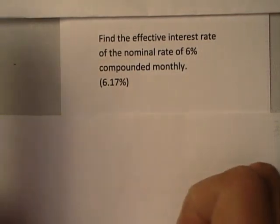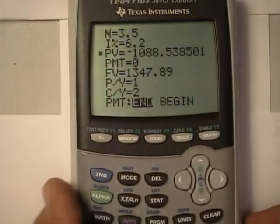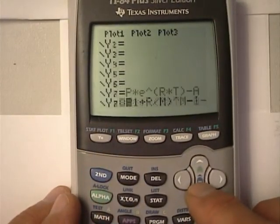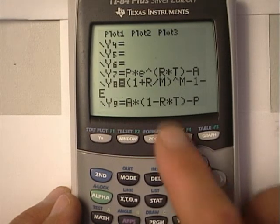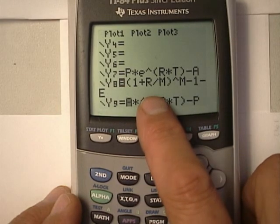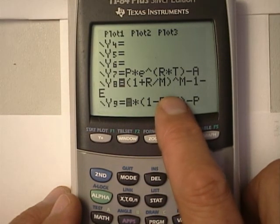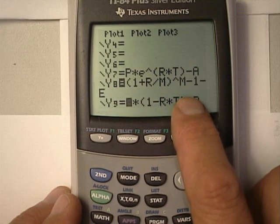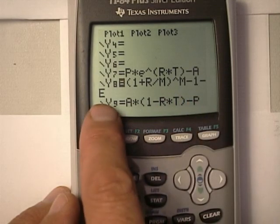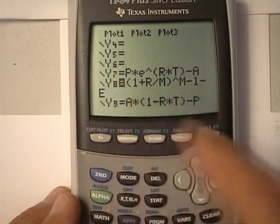So the formula is pretty straightforward. You can look it up in just about any book, and I have put it here in Y8. So here I have it, 1 plus R over M, R being the nominal rate, M being the compoundings, raised to the number of compoundings, minus 1, and then because this is solver, I bring the effective rate to the other side, minus E.